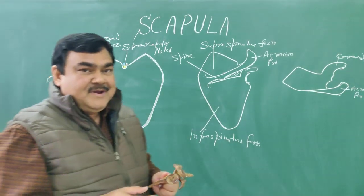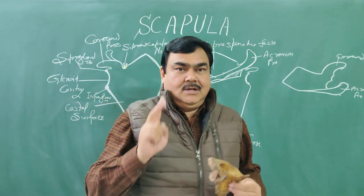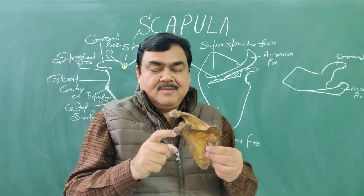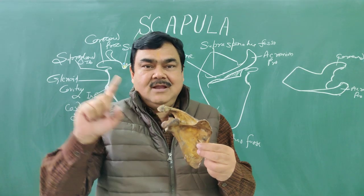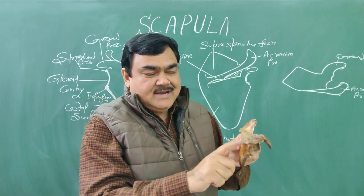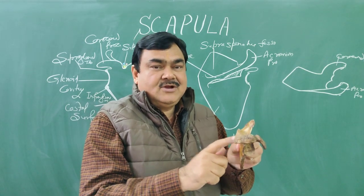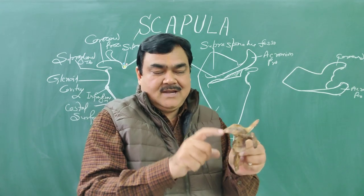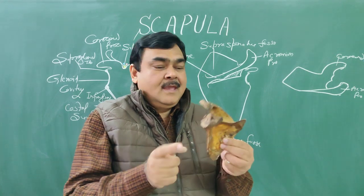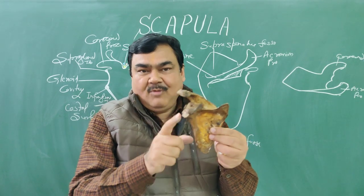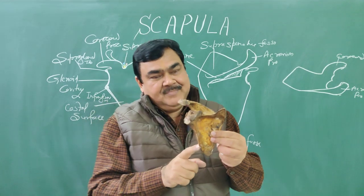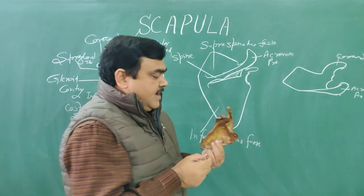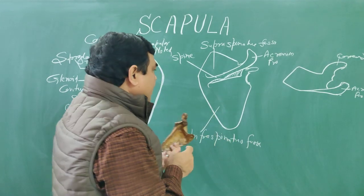For side determination, three things are important. First, the lateral angle forms the glenoid cavity — it lies on the lateral side. Second, the spinous process lies on the dorsal side, which is convex, and it divides the dorsal surface into supraspinous and infraspinous fossae. Third, the lateral border is the thickest border, and the inferior angle lies inferiorly.